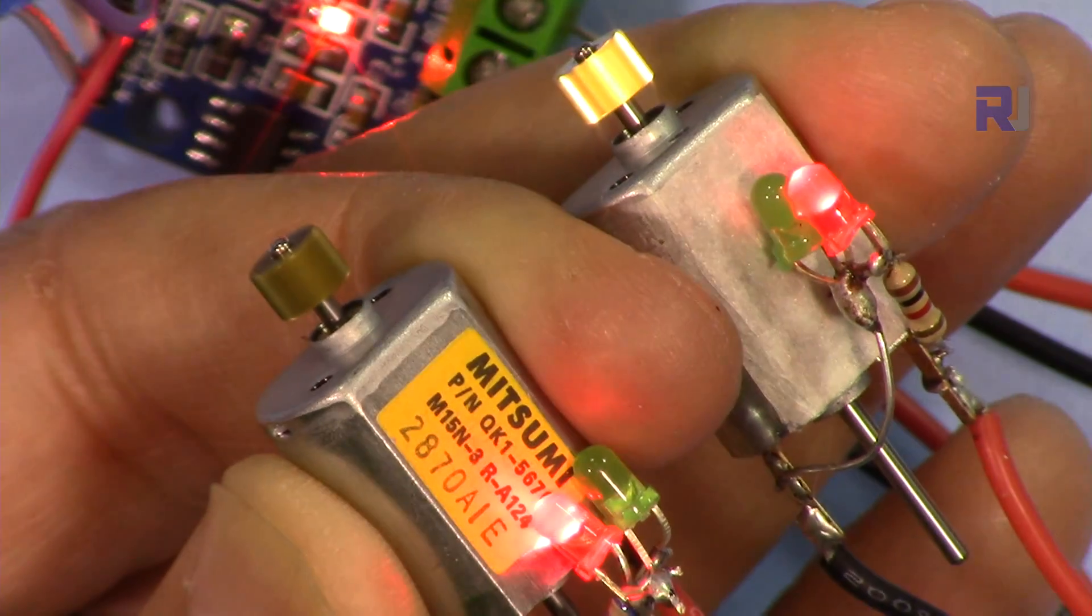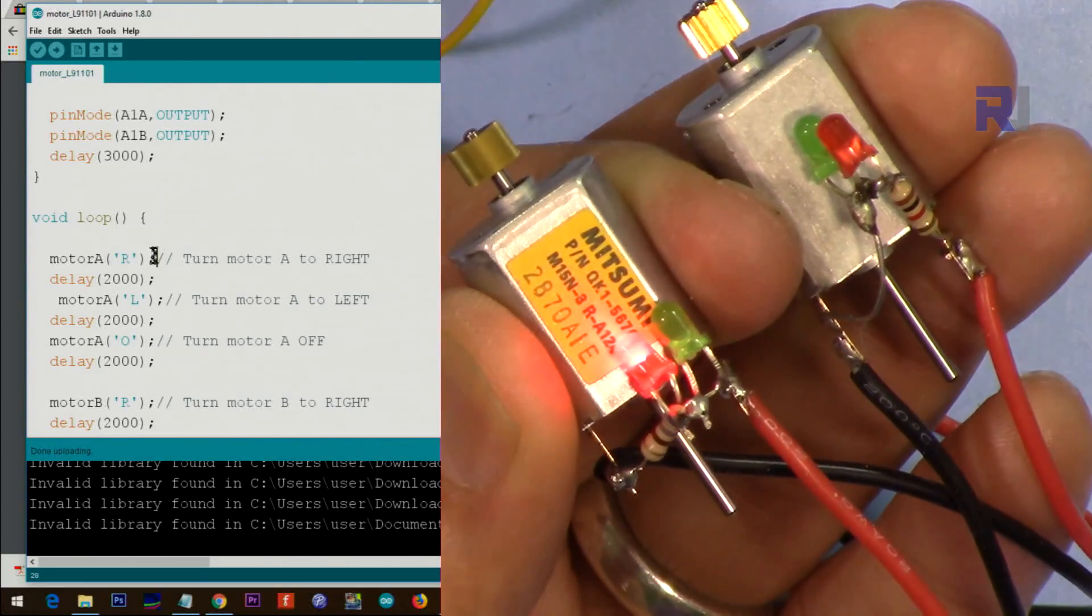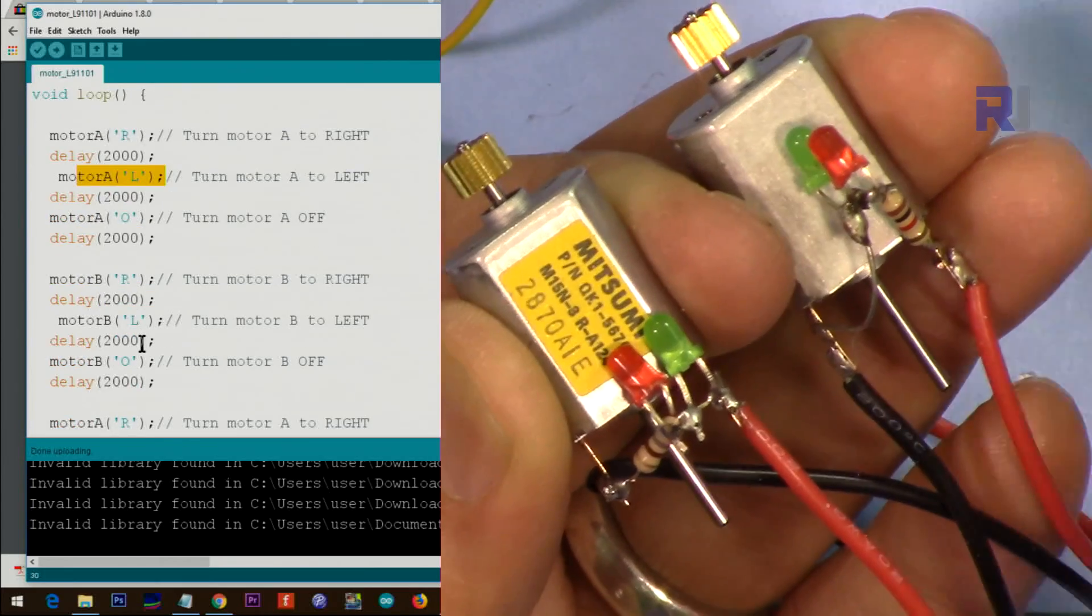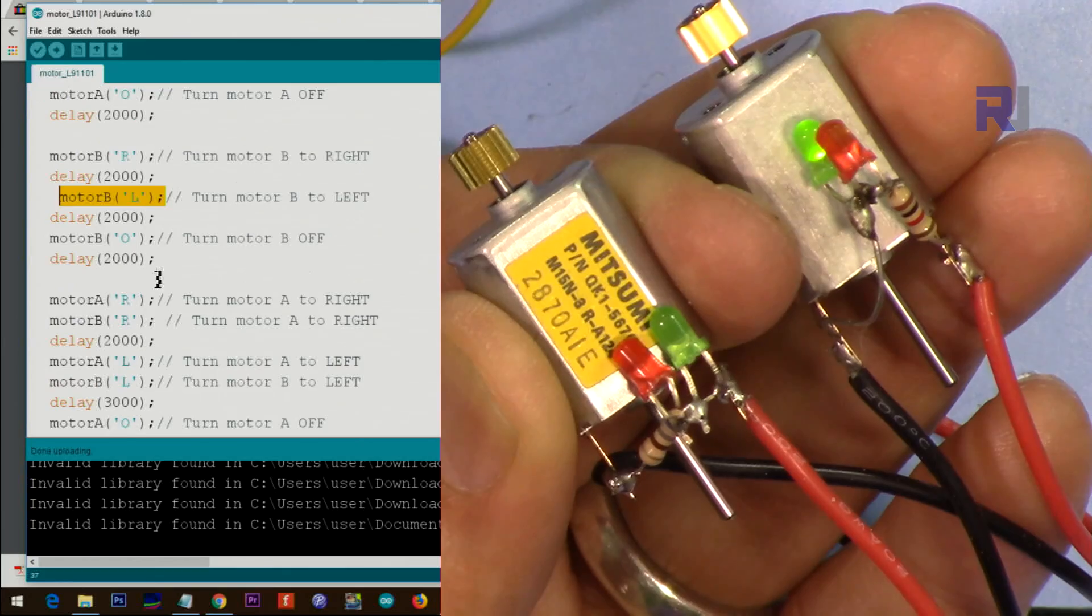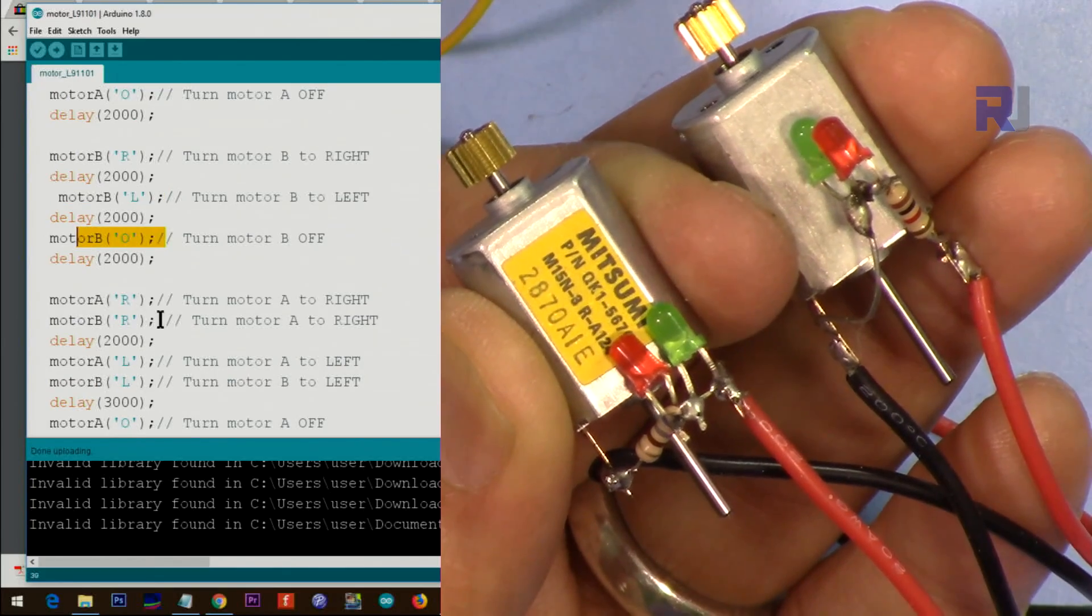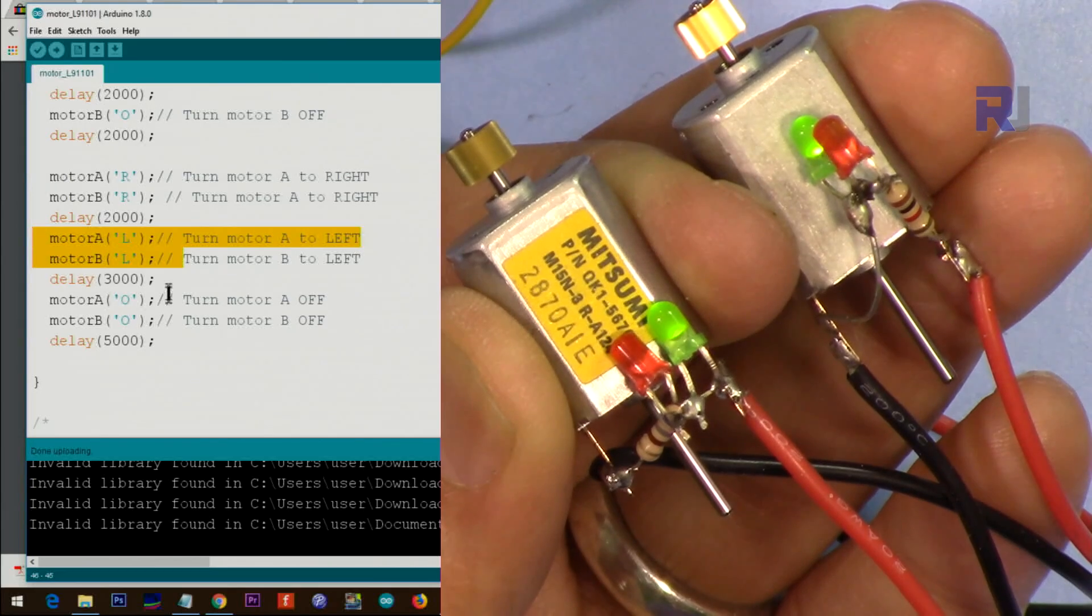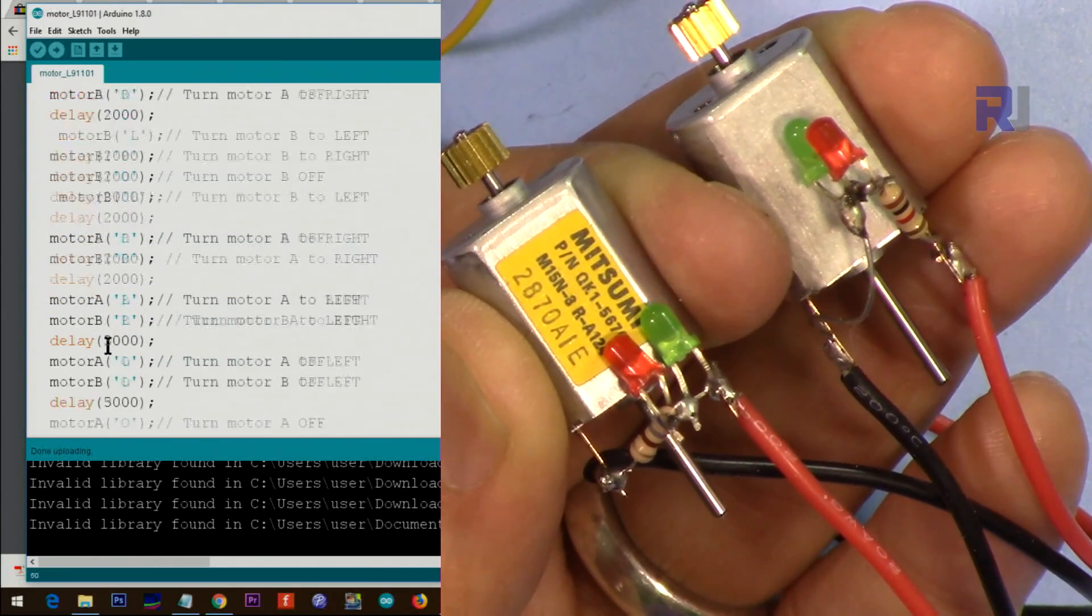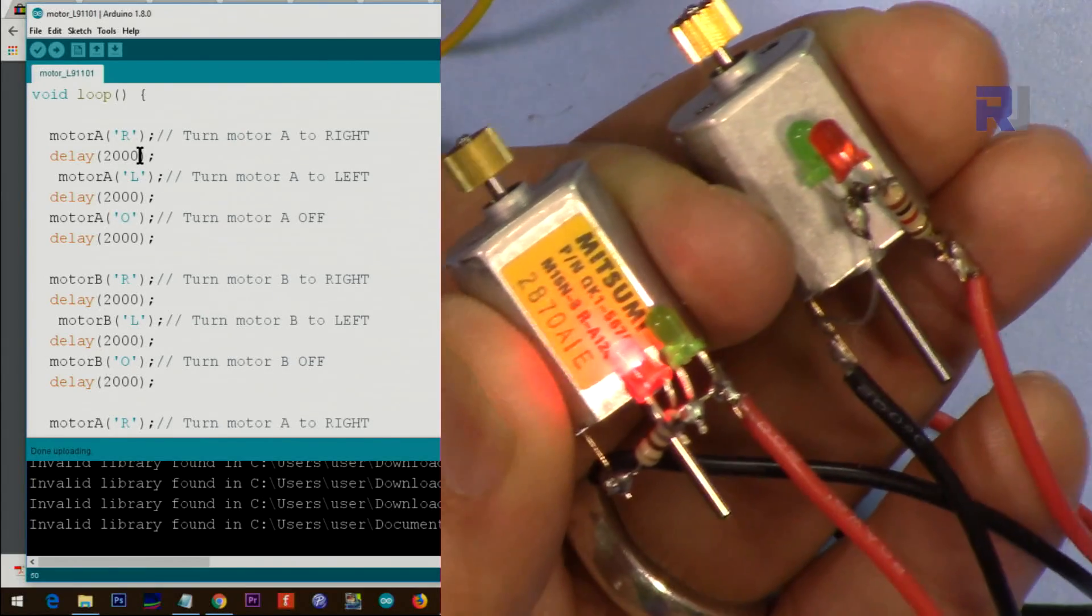Both of them now stop and then start again. So first motor A goes to the right, this goes to the left, then stops. Then motor B goes to the right and then goes to the left, then stops. Then both motors rotate, then both to the left, and then both stop. Here for five seconds, and then it comes back to this and continues like that.